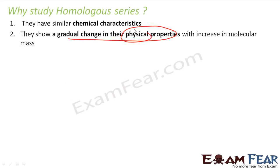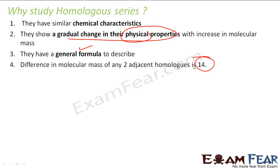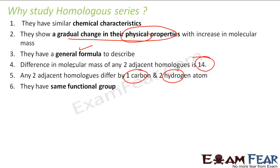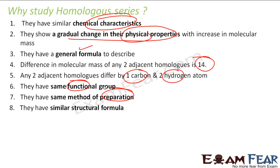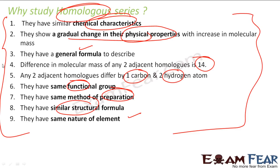They show a gradual increase in physical properties — please note, a gradual change in physical properties based on their molecular mass. They have a similar general formula to describe them. The successive compounds differ by 14 in molecular mass because CH2 is one carbon (12) plus two hydrogens (1 each), which equals 14. They have the same functional group — functional groups I will discuss later — but all elements in a homologous series must belong to the same functional group because they have the same chemical properties. They have the same method of preparation and similar structural formulas. They have the same nature of elements. Since they have so many things in common, that is the reason why we study homologous series.